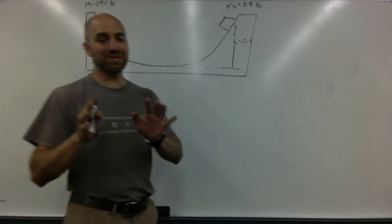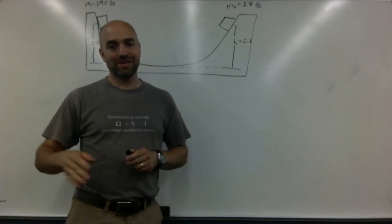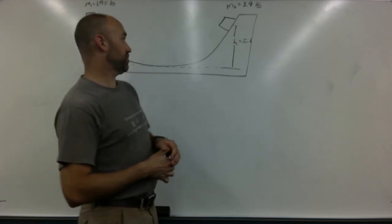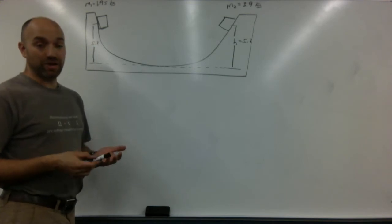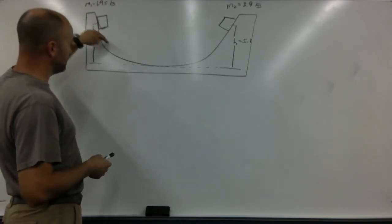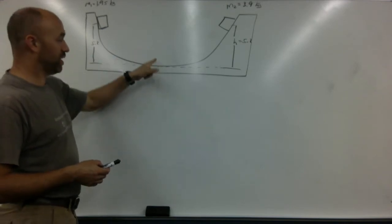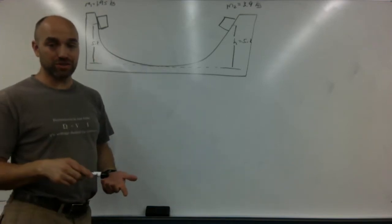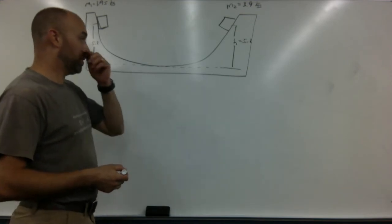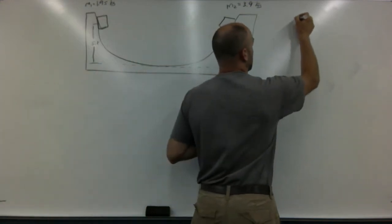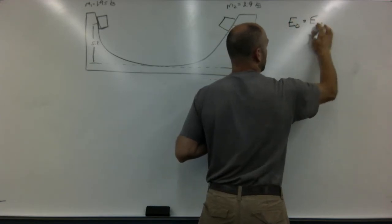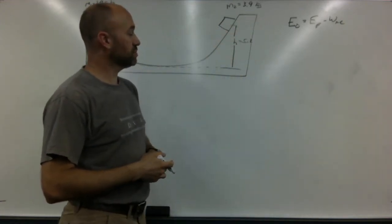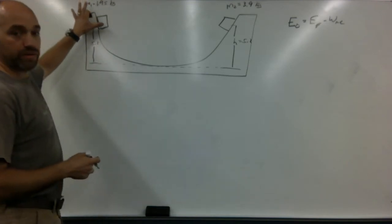So to start with, this is a simple energy problem. This mass is going to slide down, and we want to know how fast it's going at the bottom. That's the same thing we've been doing: energy initial equals energy final minus work not conserved. Let's just do this for mass one first, then mass two in a minute.